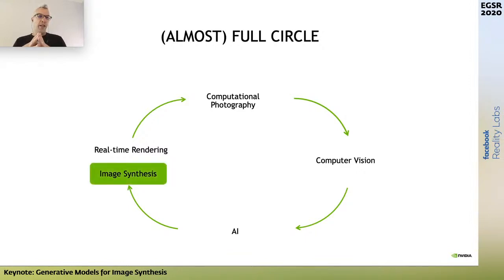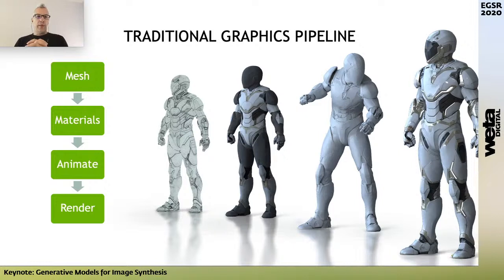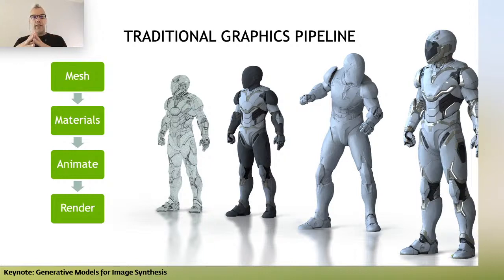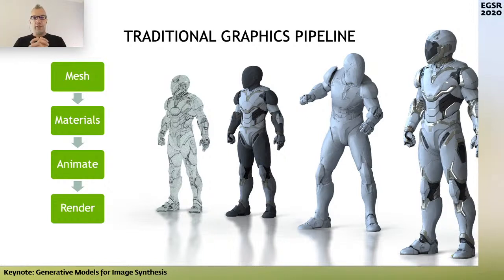More recently we've been using AI for image synthesis, which is going back to where I started, and this is what I will be talking about today. You all know the traditional graphics pipeline: we create meshes, assign materials, animate those meshes, and finally render them. This is clearly very successful — games, media entertainment, simulation, and so forth. It's been the standard pipeline that everybody uses. At the same time, it is labor intensive and some things are difficult to do.